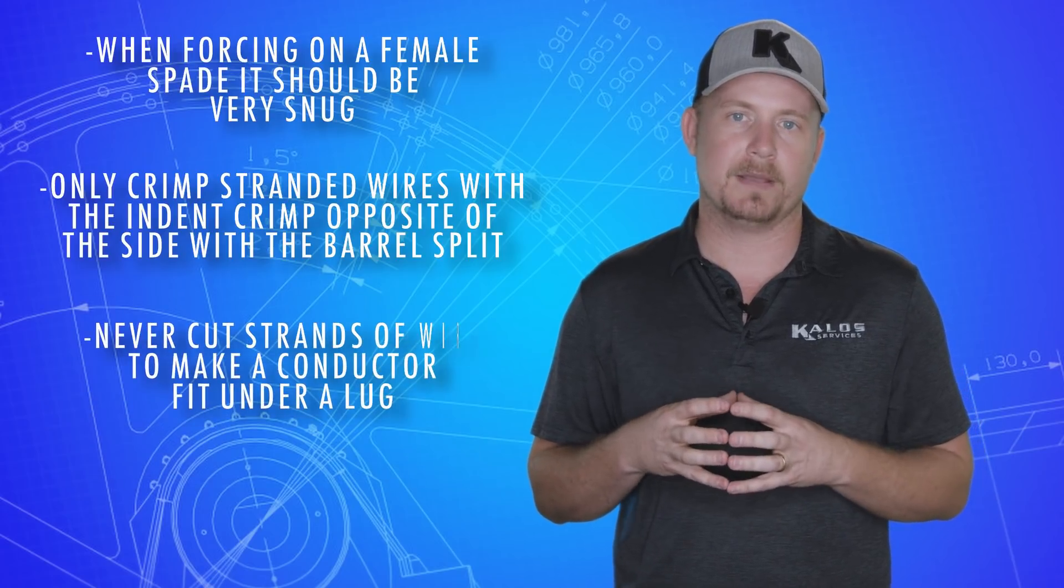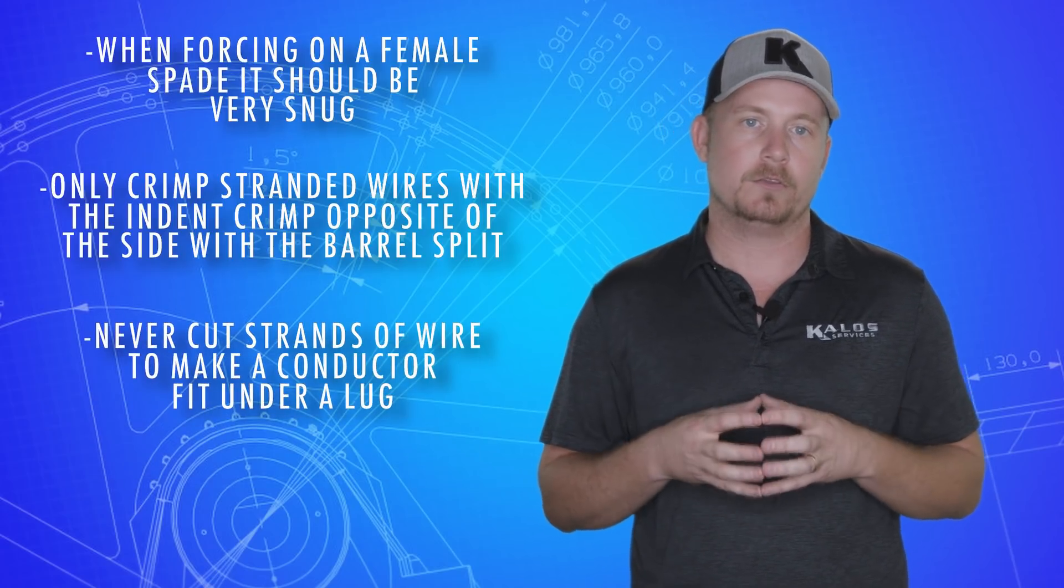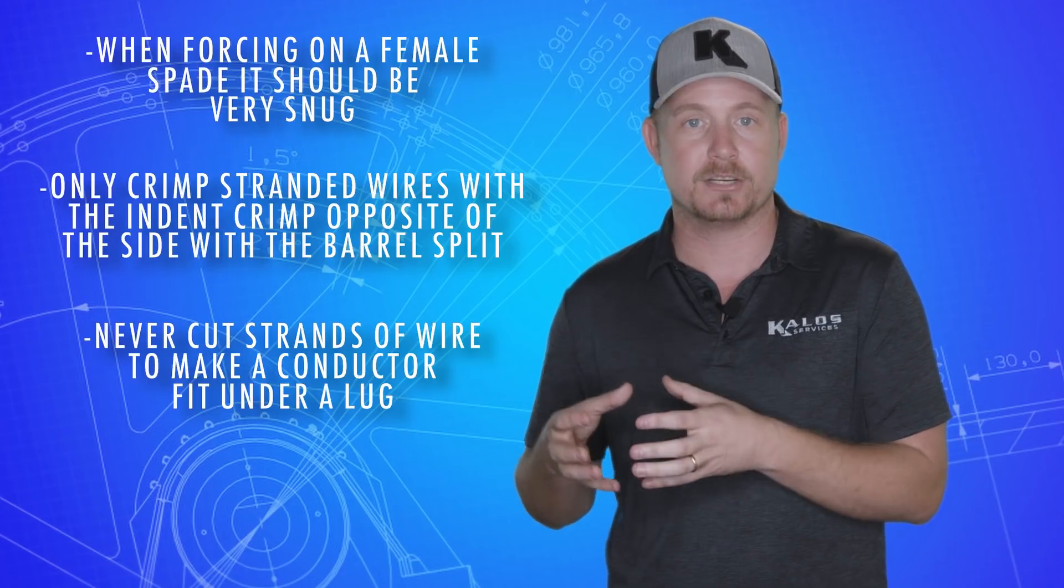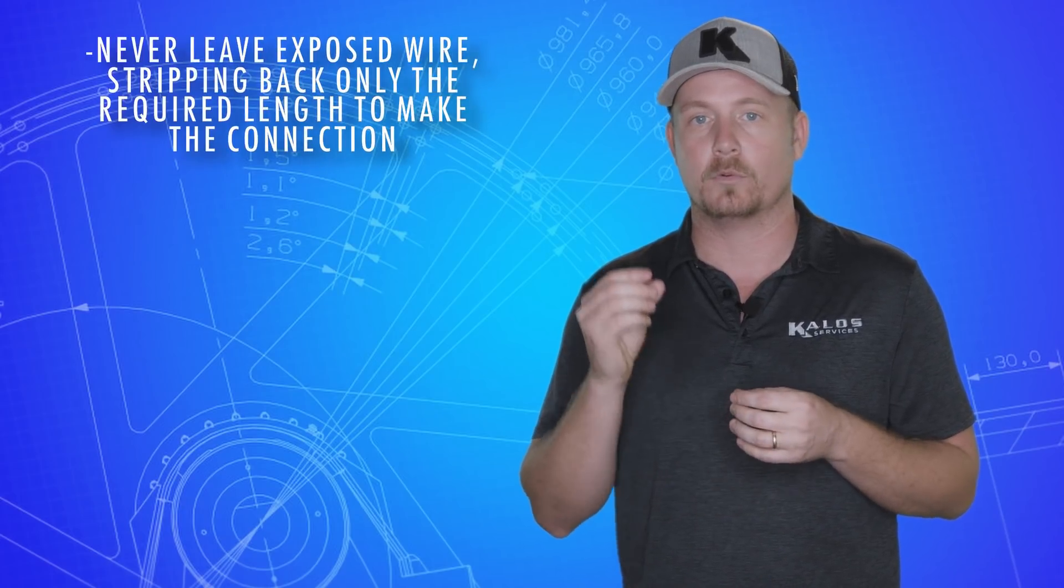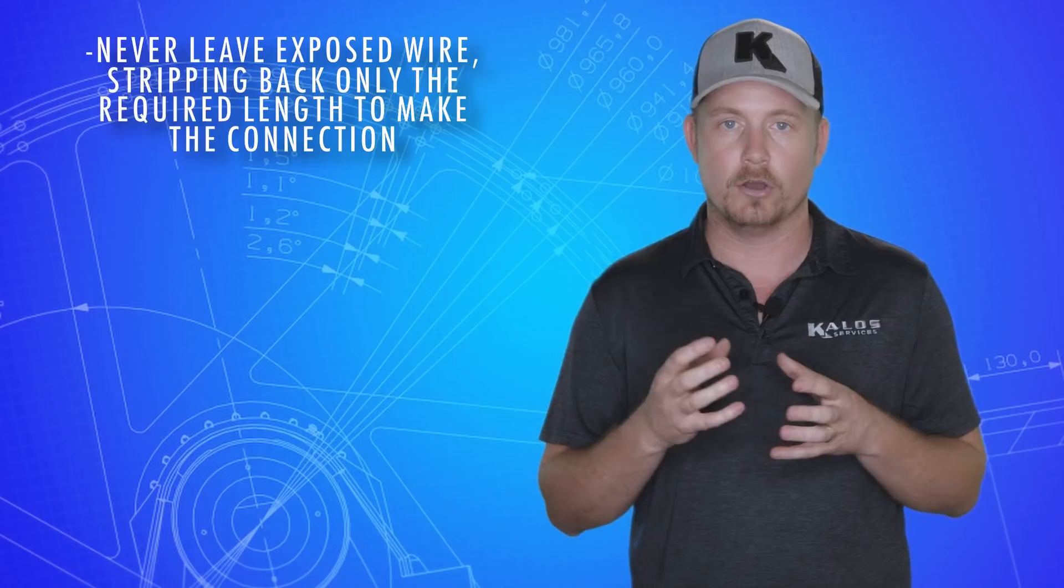Never cut strands of wire to make a conductor fit under a lug. Use the proper connector termination type for the conductor, and it has to be the right size. Never leave exposed wire. Strip back insulation only to the length required to make the connection and no more.